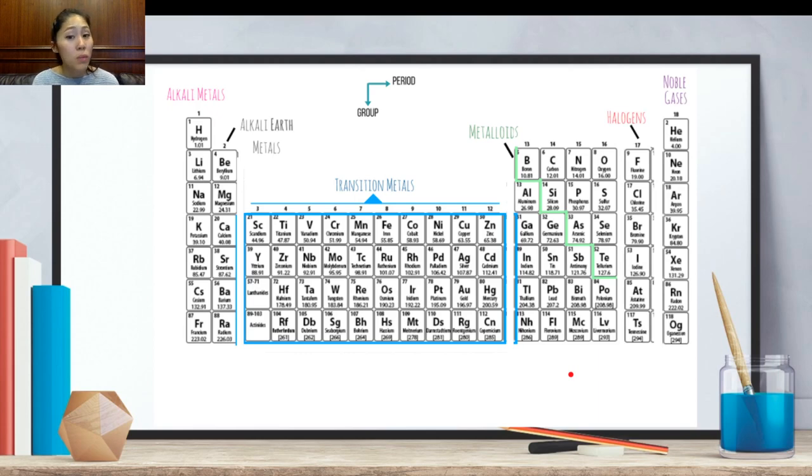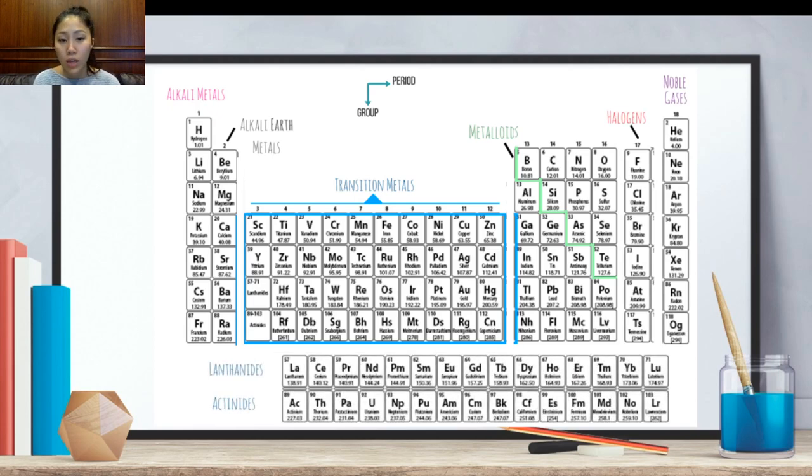At the bottom of the periodic table, you have lanthanides and you have actinides. They're also known as the inner transition metals, and the reason being, if you look carefully here, the lanthanides are actually here and the actinides are here in this box, and each one of these two boxes include all of the elements in this period, as well as the period below it.